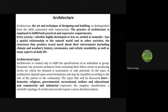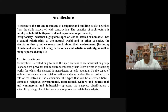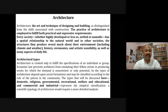Architecture is created to fulfill the specifications of an individual or group, though economic law prevents architects from producing works for which demand is non-existent. Types of architecture depend upon social formations and may be classified as domestic, religious, governmental, recreational, welfare and educational, and commercial and industrial — representing the simplest classification. A scientific typology of architecture would require more detailed analysis.